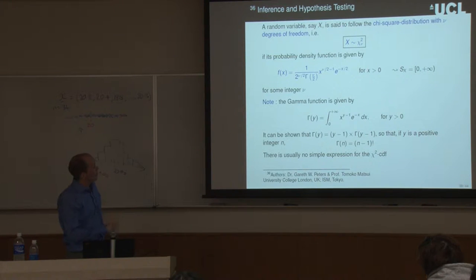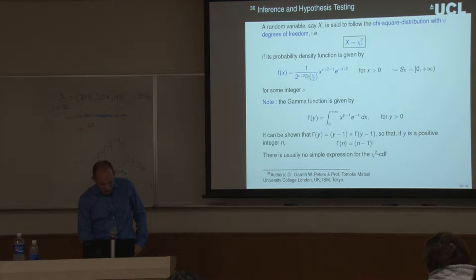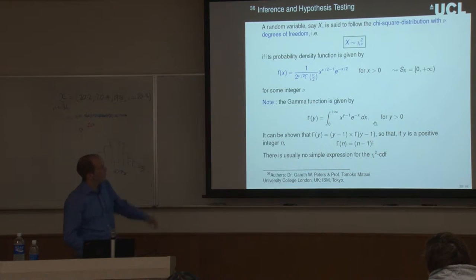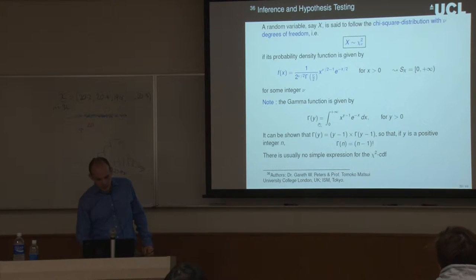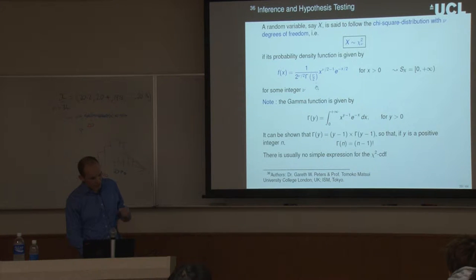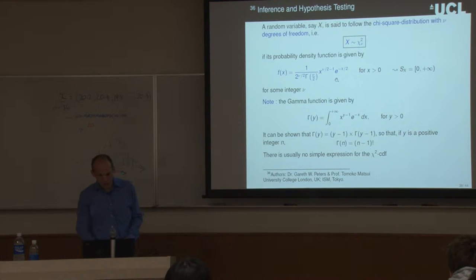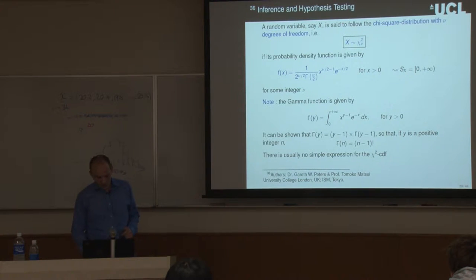The probability density function of chi-squared involves the gamma function, defined by an integral, where for integers gamma of n equals n minus one factorial. We can use chi-squared tables to calculate p-values — there's no simple closed form for the cumulative distribution function. Looking at plots of chi-squared distributions, as the degrees of freedom increases, the CDF becomes more symmetric and closer to a normal distribution. As the number of degrees of freedom tends to infinity, it approaches a standard normal. The expectation is nu and the variance is two nu.